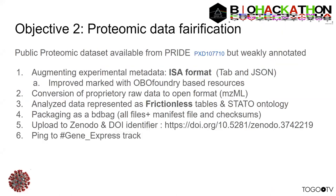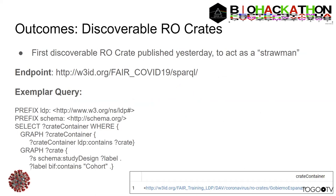The second objective was proteomic data verification. We're using a dataset from PRIDE that has fairly weak annotations, augmenting it with ISA-Tab and ISA-JSON metadata marked up with OBO Foundry, converting the raw data to an open format, representing it as Frictionless tables, packaging it as a BDBag, and uploading to Zenodo to get a DOI. Yesterday we had our first discoverable crate, which we're now using as a straw man to tweak the ingestion pipeline. There's a SPARQL endpoint with an exemplar query for cohort study design.